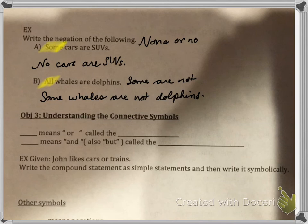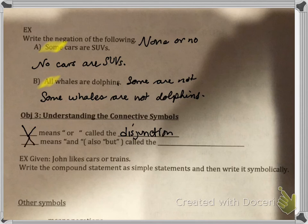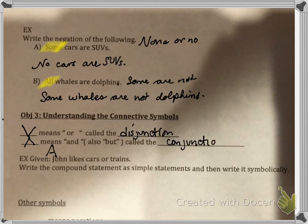Objective number three: understanding the connective symbols. We talked about the connectives 'and,' 'or,' and 'but.' Symbolically, 'or' looks like a V and is called a disjunction. 'And' looks like an upside-down V — it almost looks like an A — and is called the conjunction. It's also the symbol for 'but,' because 'but' acts like 'and.' If you've seen Schoolhouse Rock's 'Conjunction Junction, What's Your Function?' — our function here is 'and' and 'but.' When someone says 'I really like you, but it's not working out for me,' that 'but' means 'and' — so it's kind of a compliment that's not really a compliment.